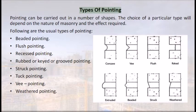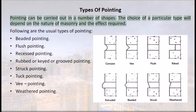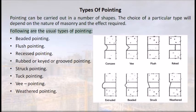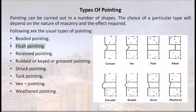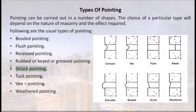Types of pointing: pointing can be carried out in a number of shapes, and the choice depends on the nature of masonry and the effect required. The usual types include: beaded pointing, flush pointing, recessed pointing, rubbed/keyed/grooved pointing, struck pointing, tuck pointing, V pointing, and weathered pointing.